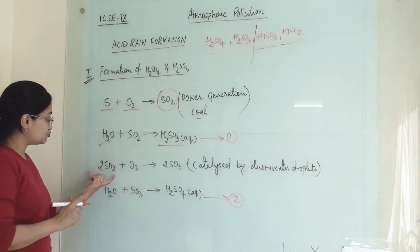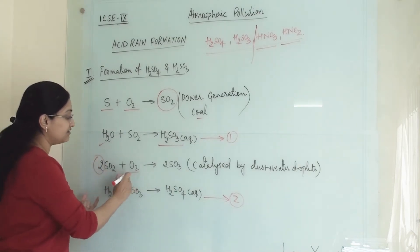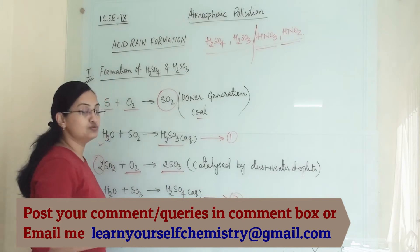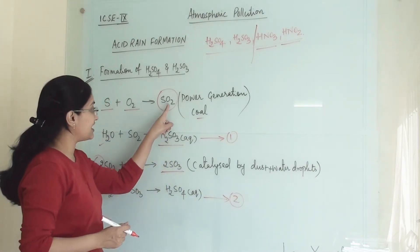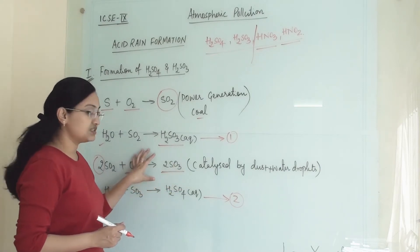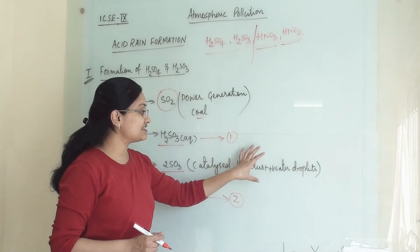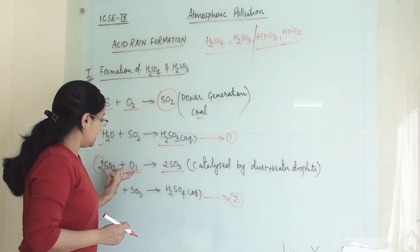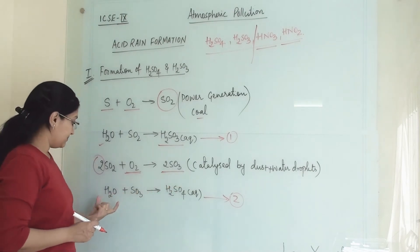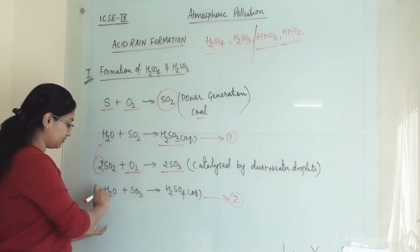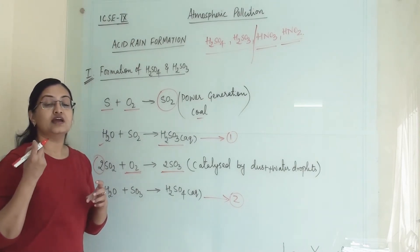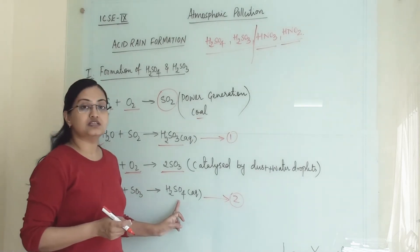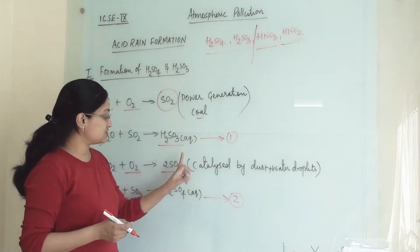In another case, when two molecules of sulfur dioxide are oxidized in air by reacting with oxygen, they produce two molecules of sulfur trioxide. This reaction is catalyzed by dust particles and water droplets present in the atmosphere. When this sulfur trioxide then reacts with water mist or rainwater droplets, it gives us sulfuric acid traces in aqueous form.